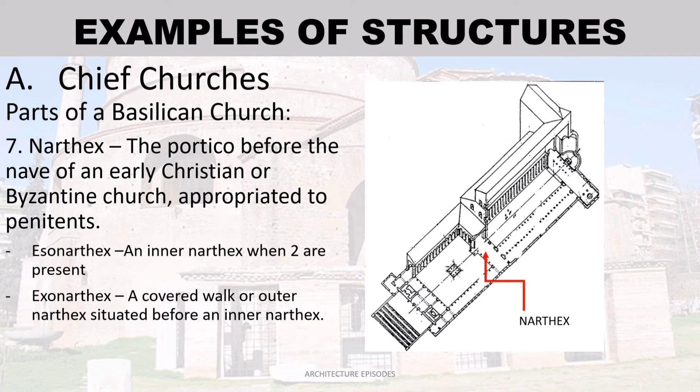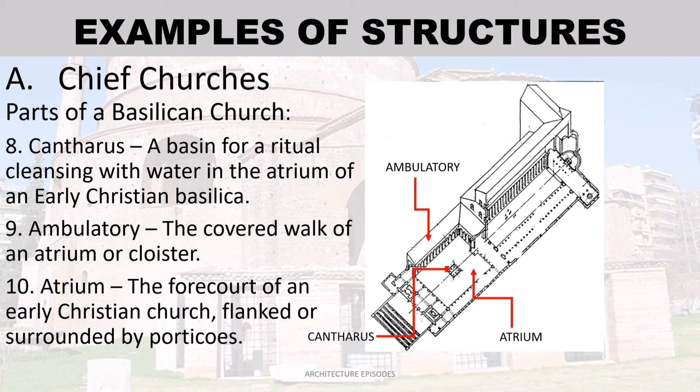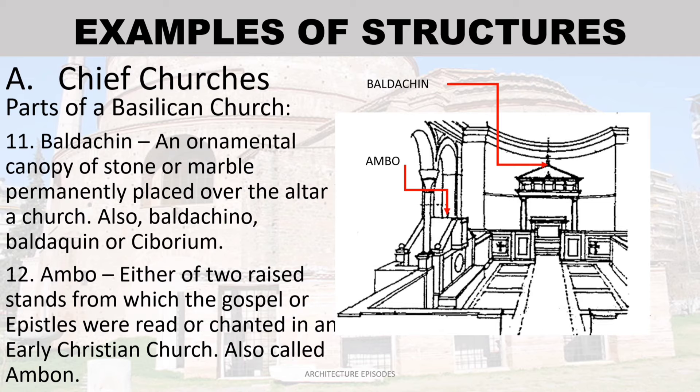Narthex — the portico before the nave of an early Christian or Byzantine church, appropriated to penitents. Esonarthex — an inner narthex when two are present. Exonarthex — a covered walk or outer narthex situated before an inner narthex. Cantharus — a basin for ritual cleansing with water in the atrium of an early Christian basilica. Ambulatory — the covered walk of an atrium or cloister. Atrium — the forecourt of an early Christian church, flanked or surrounded by porticos.